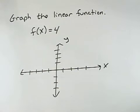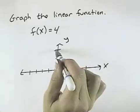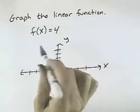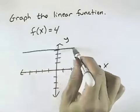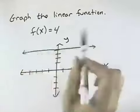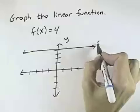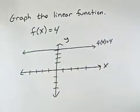We want to graph the linear function f of x equals 4. That's the same as y equals 4, and y equals 4 everywhere — it crosses this horizontal line. So the horizontal line that passes through y equals 4 would be the graph of the function f of x equals 4.